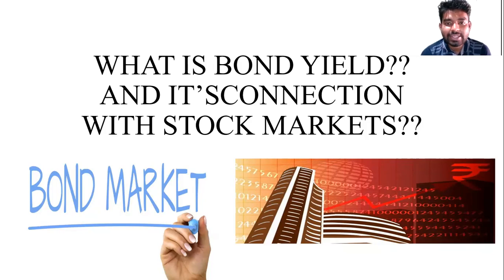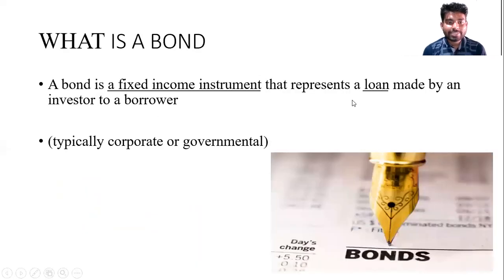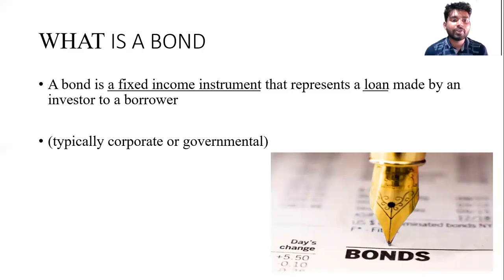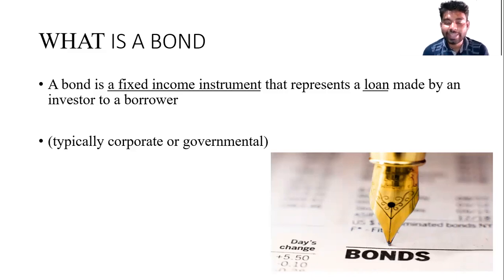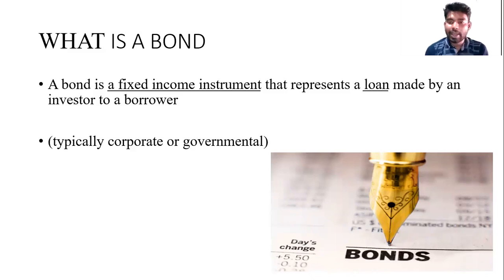Let us first understand what is a bond. A bond is basically a fixed income instrument that represents a loan made by an investor to a borrower. In simple words, whenever a corporate or a government wants to raise money from the public through a debt instrument, they issue bonds. It is used by both corporates as well as governments.